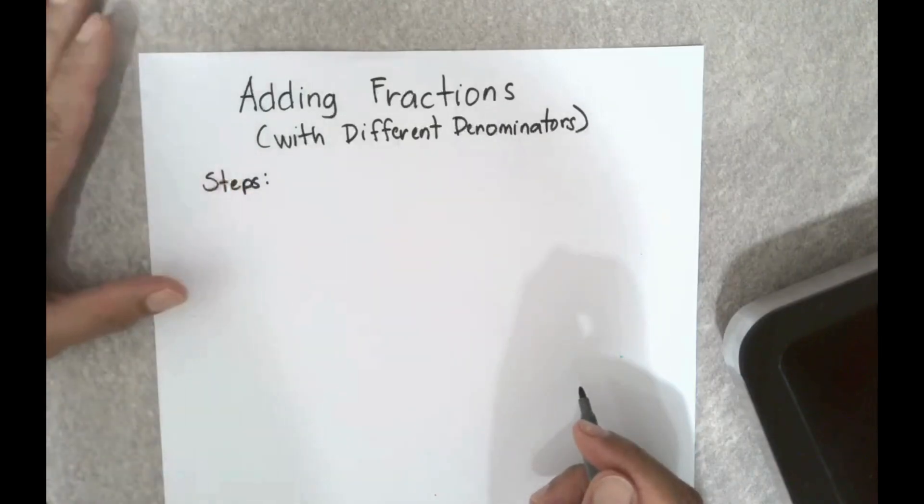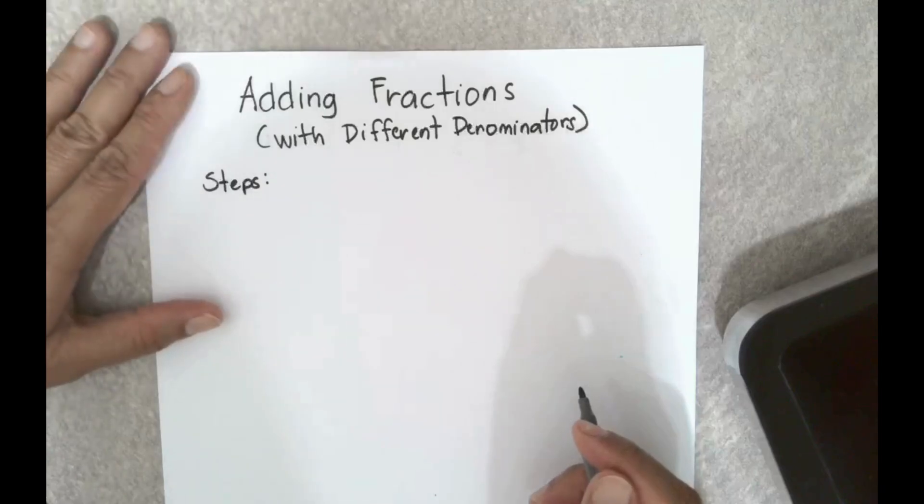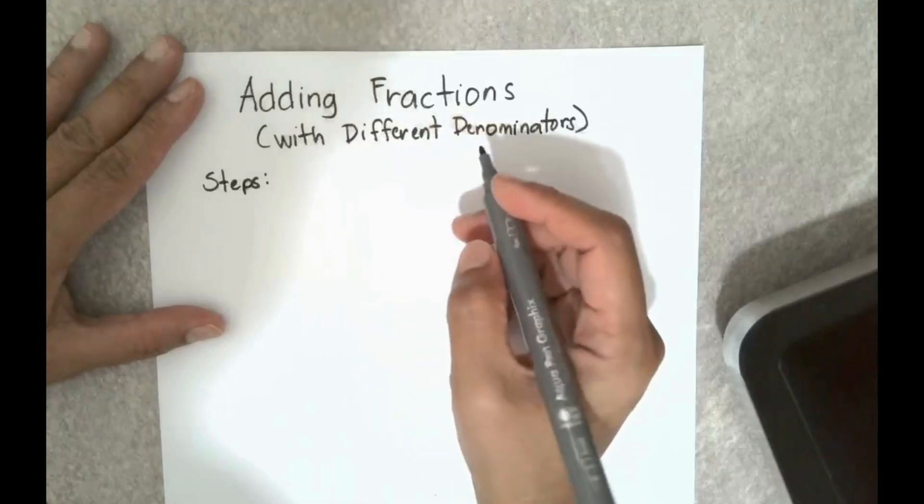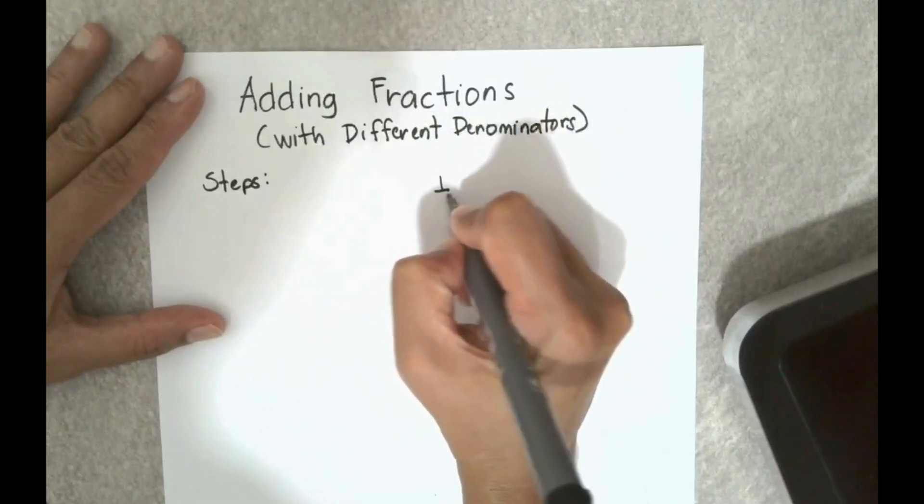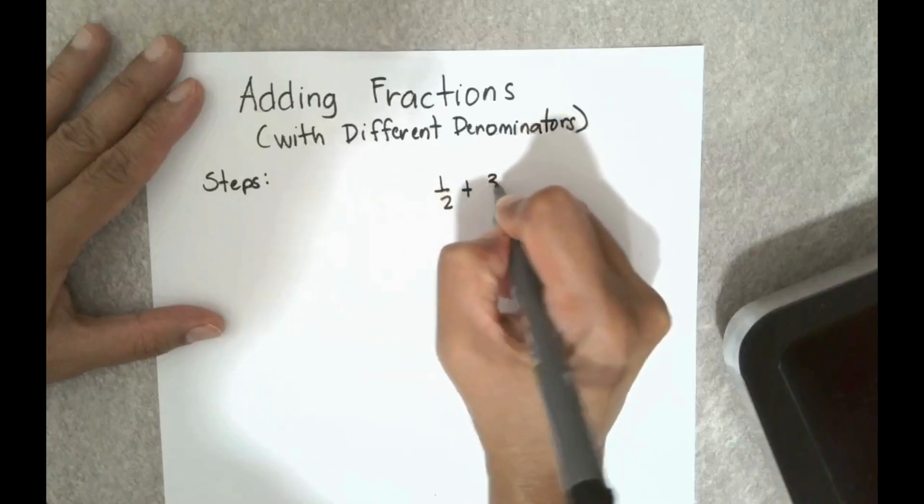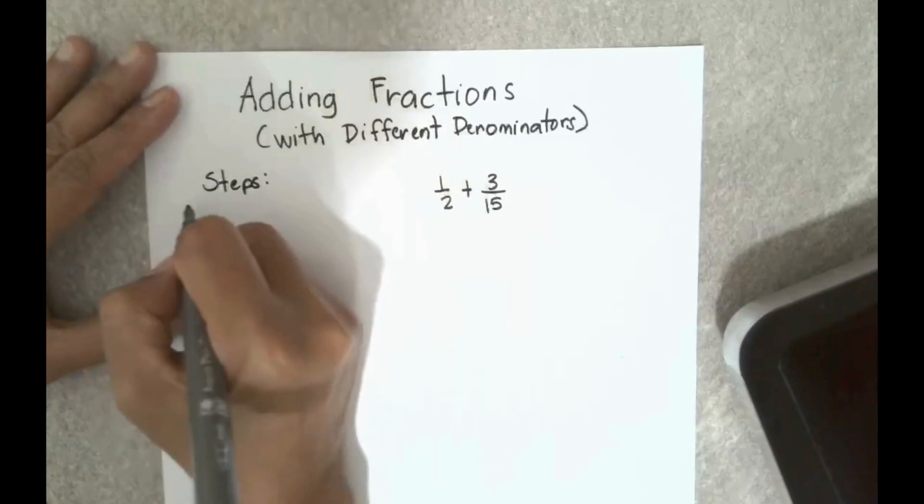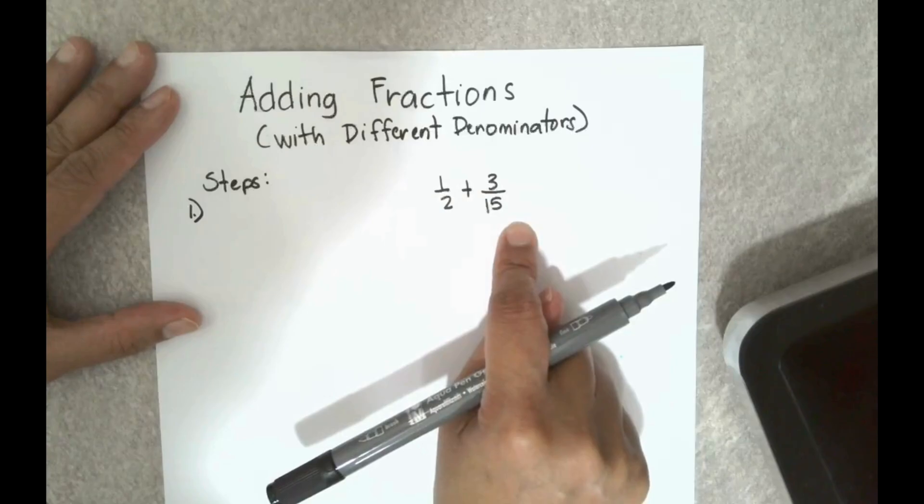For this video I'm not going to go over the reasoning anymore. This is just going to be practice on how to add fractions. The problem is 1 half plus 3 over 15. Step number one would be to make the denominators the same.